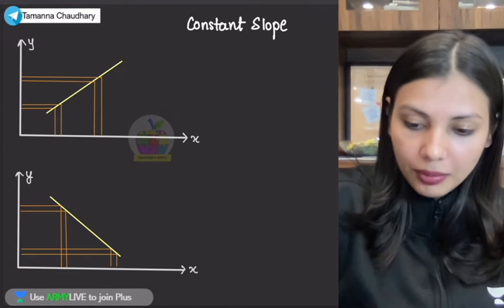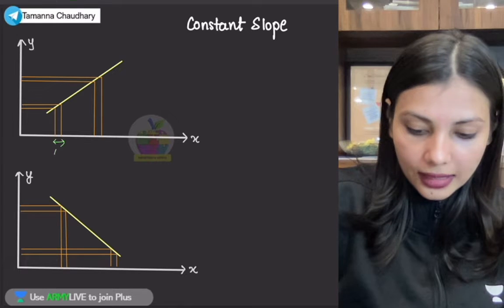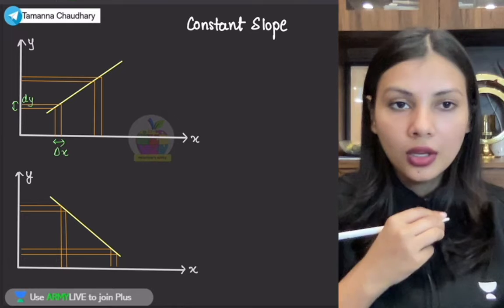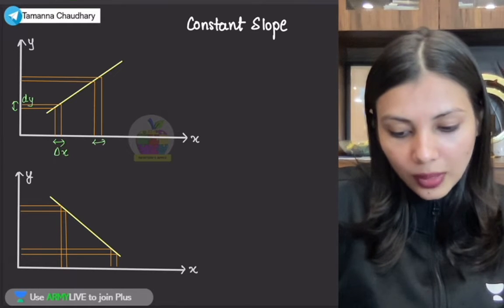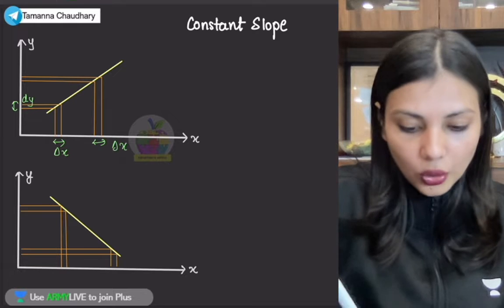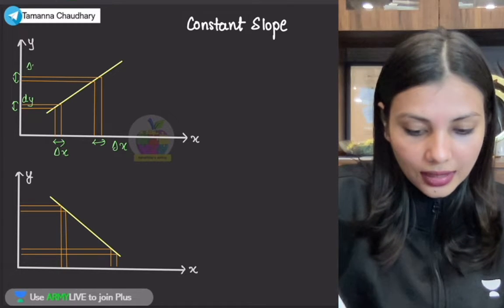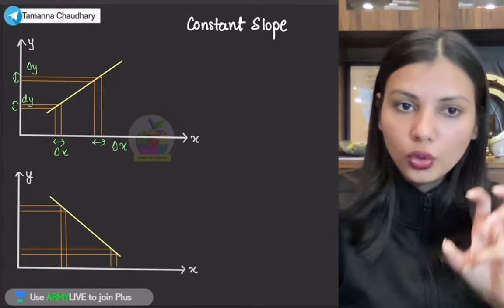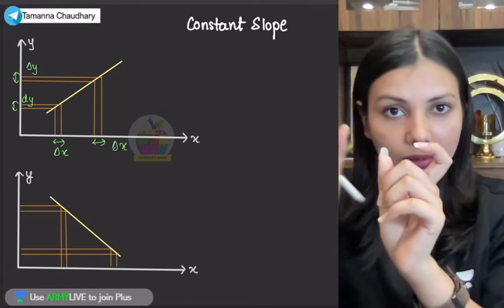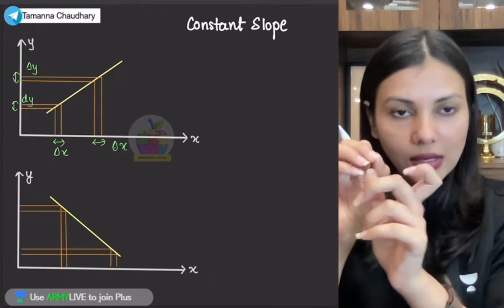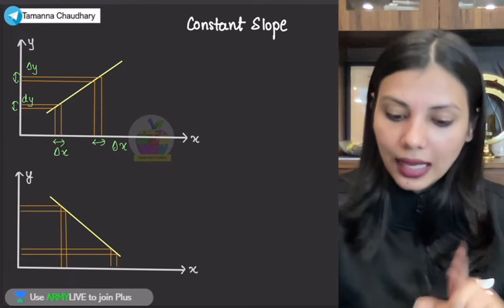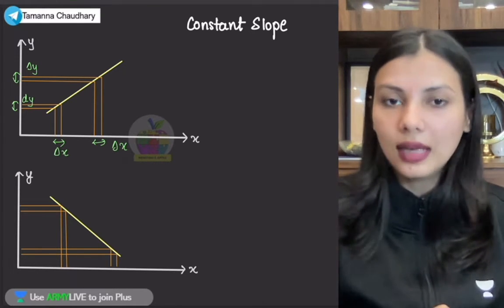Dekho, yahaan par bhi, main chhota sa change leke aayi DX mein, iski wajah se ek chhota sa change aaya DY mein. Dubara se, main kuch time ke baad, dubara se DX mein ek chhota sa change leke aayi X quantity mein, aur uski wajah se ek chhota sa change aa raha hai Y quantity mein. So ye fixed hai — agar main X quantity mein jo change leke aayi, agar usko constant rakhti hun, to Y quantity mein bhi jo change aayega, woh constant rahega. And that is the same for the second graph as well.